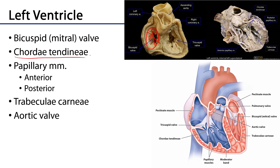There will be anterior and posterior papillary muscles that correspond to the anterior and posterior cusps of the bicuspid valve, but there isn't any fidelity between the chordae tendineae between the cusps and the papillary muscles.